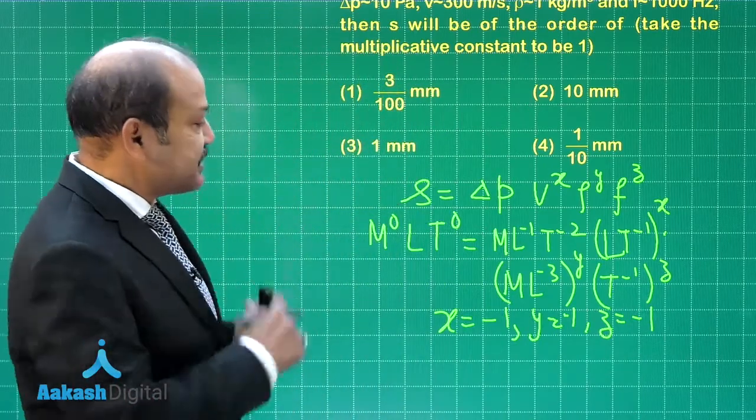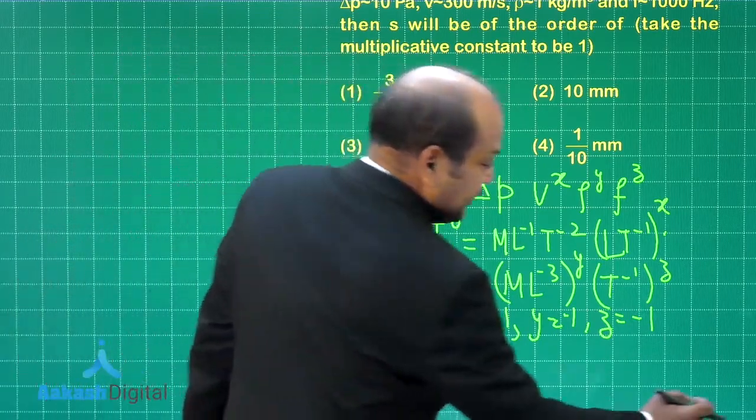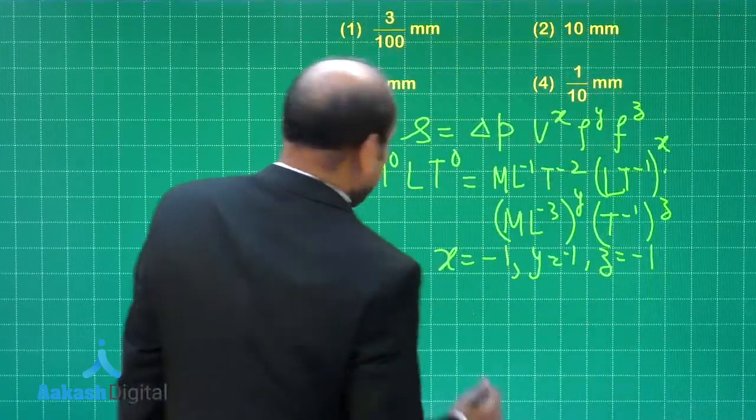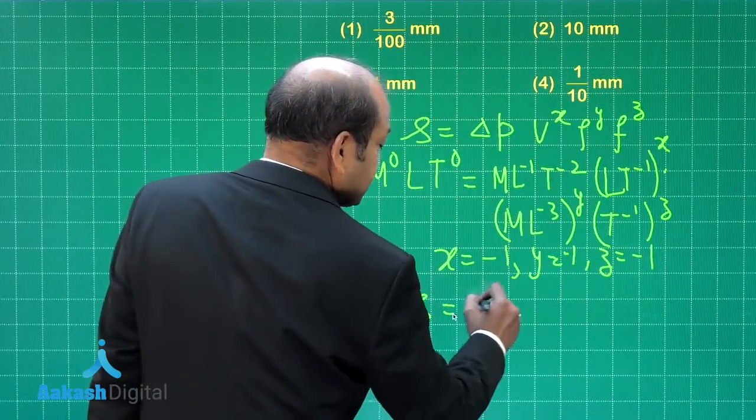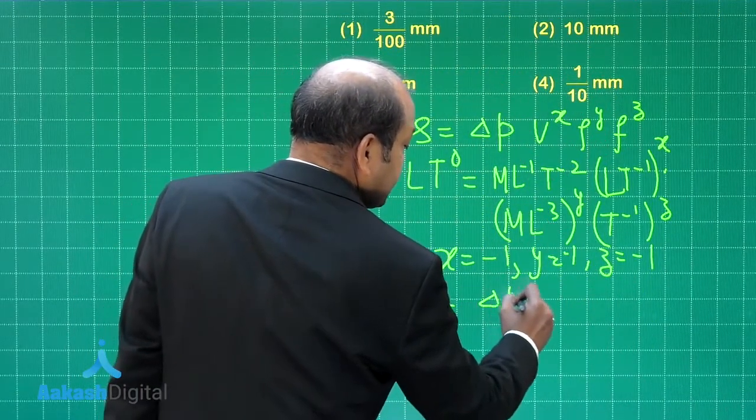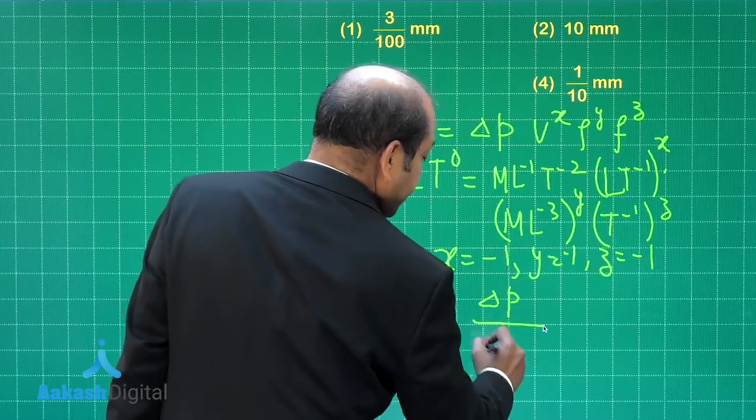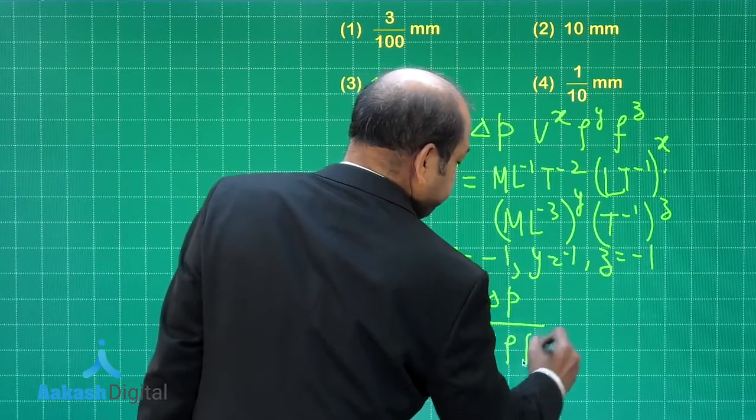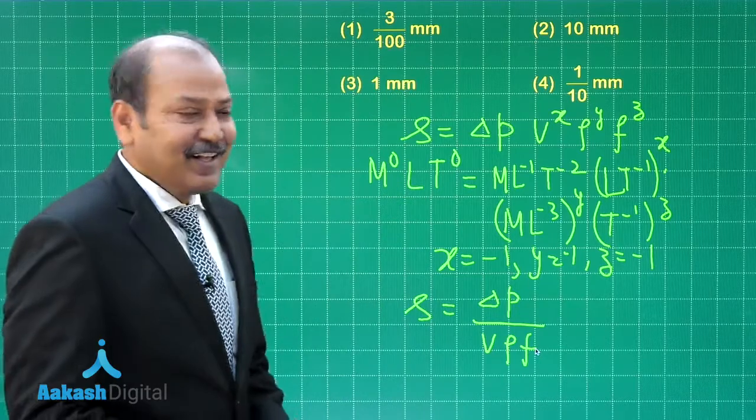So that means the final expression according to this question for s is coming out as, you know, s is equal to Δp divided by v into ρ into f. Now the values in approximate terms are given.